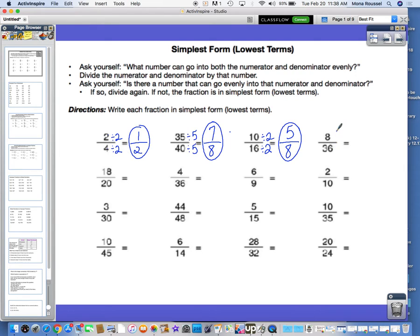8/36. We know 2 can go into 8, and 2 can go into 36, so we could divide them both by 2. 2 goes into 8 four times, and 2 goes into 36 eighteen times. And when we ask ourselves the question, can anything go into both 4 and 18 evenly? Yes, 2 can go into 4, and 2 can go into 18.